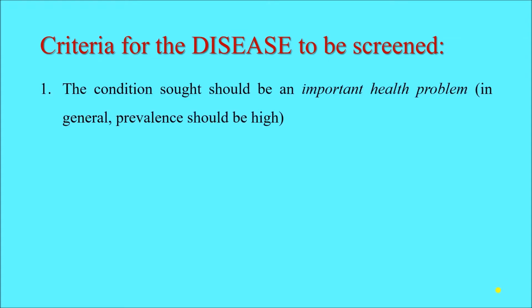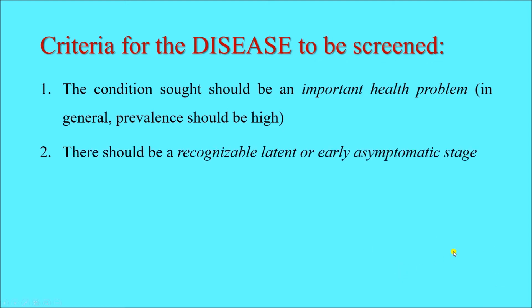The first criterion is that the condition sought should be an important health problem — in general, prevalence should be high. We should try to screen a disease that is a public health problem. If a disease is not very prevalent, not common in the community, causes minimal suffering, and is not very infectious, there is no point wasting manpower, materials, and other resources on screening it. Diseases that are highly prevalent, quite infectious, or cause significant suffering or death are the ones worth screening.